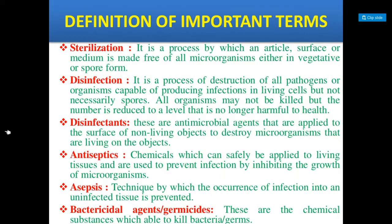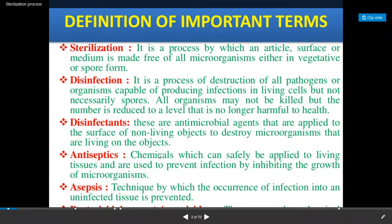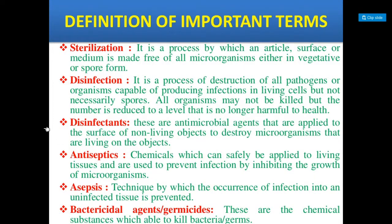Next concept is asepsis. Asepsis is a technique by which the occurrence of infection into an uninfected tissue is prevented. Next are bactericidal agents or germicides — these are chemical substances which are able to kill bacteria or germs. There are also viricides and fungicides; fungicides are those agents which kill fungi. Bacteriostatic agents are those chemical agents which inhibit the growth of bacteria — static means to inhibit growth. Fungistatic agents are those which inhibit the growth of fungi. These are the concepts related to sterilization techniques.